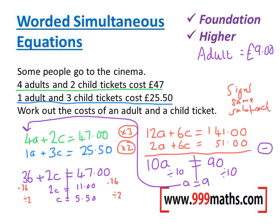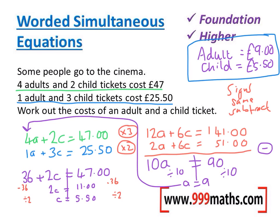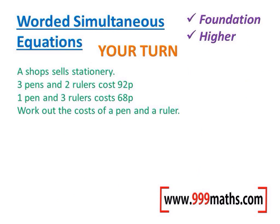Now let's check these answers — at the end of an exam I'd urge everyone to go back and verify their values work. Four adults: 4 × 9 = 36; two children: 2 × 5.50 = 11; and 36 + 11 = 47 pounds. Checking the second equation: one adult = 9 pounds, three children = 16.50, and 9 + 16.50 = 25.50. Both check out.